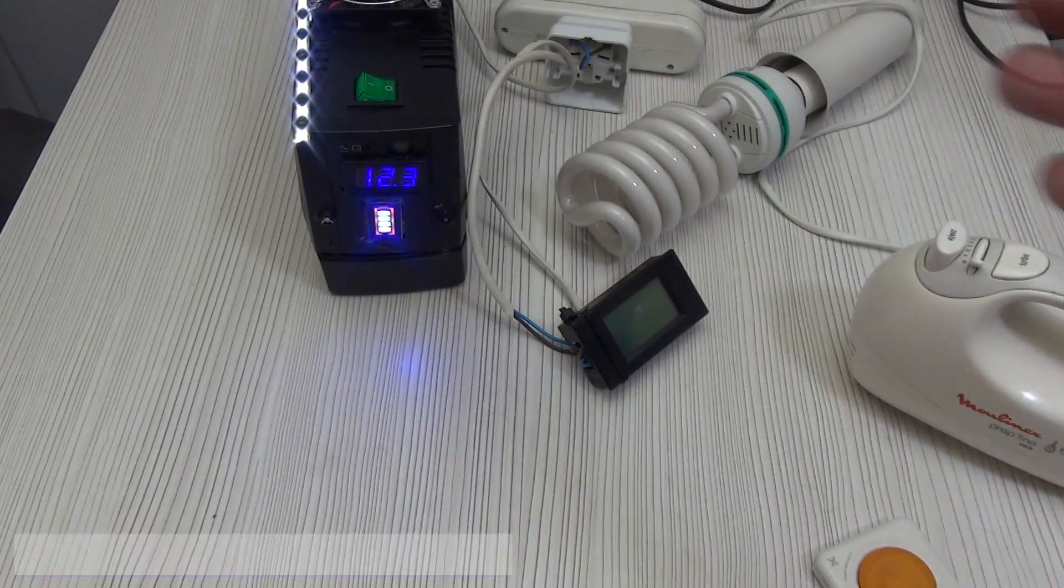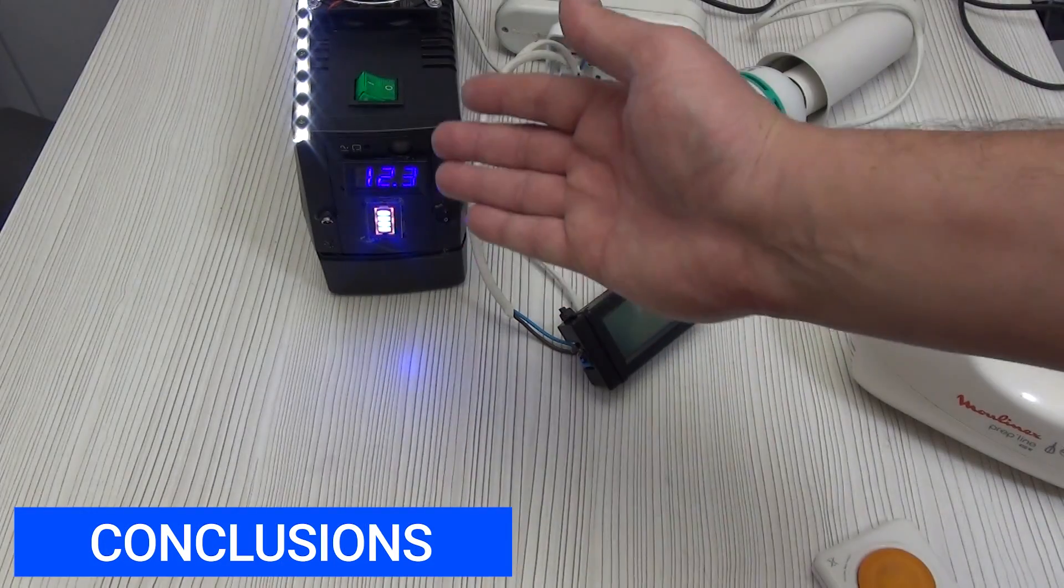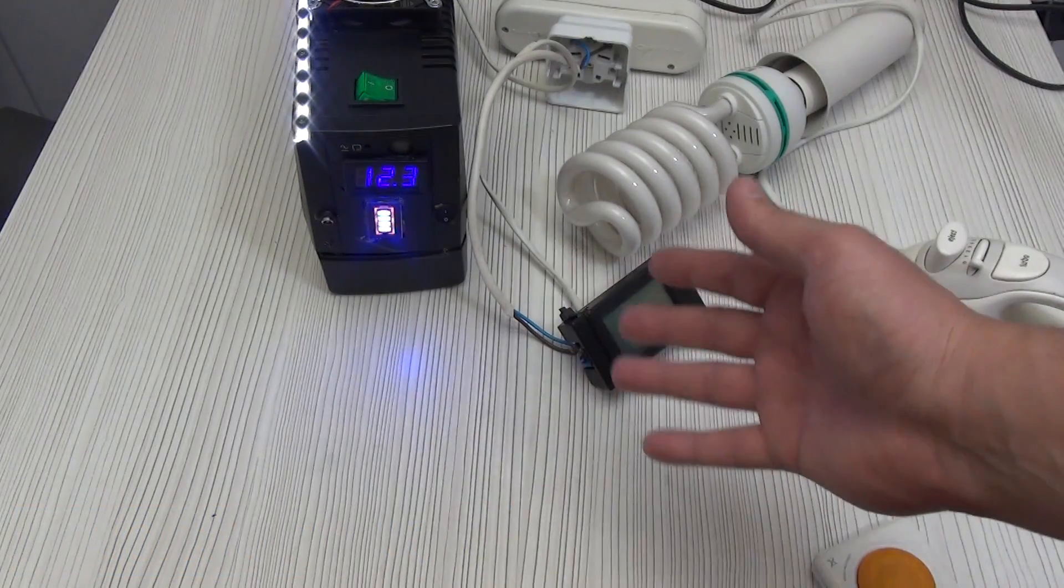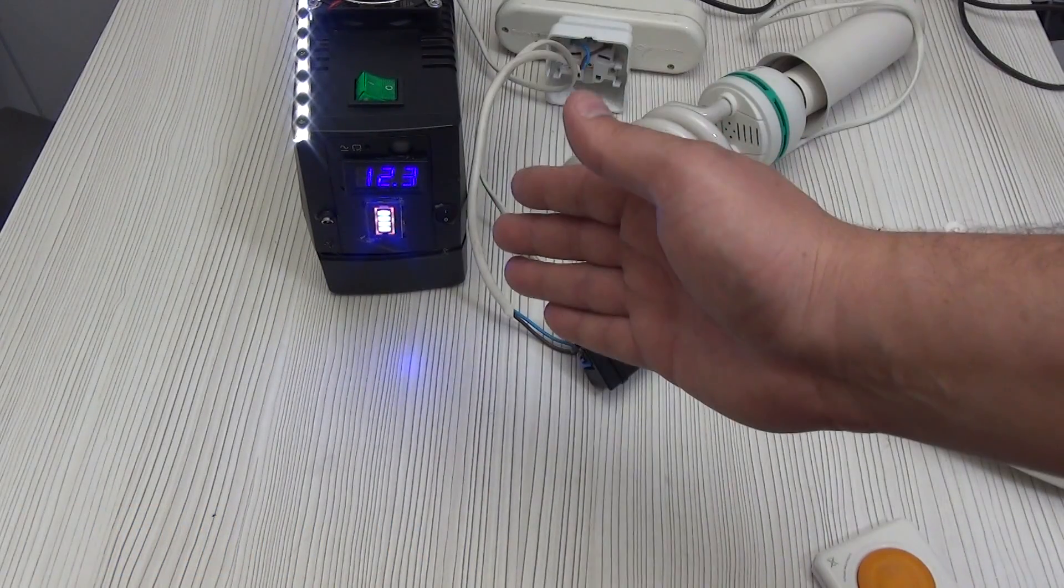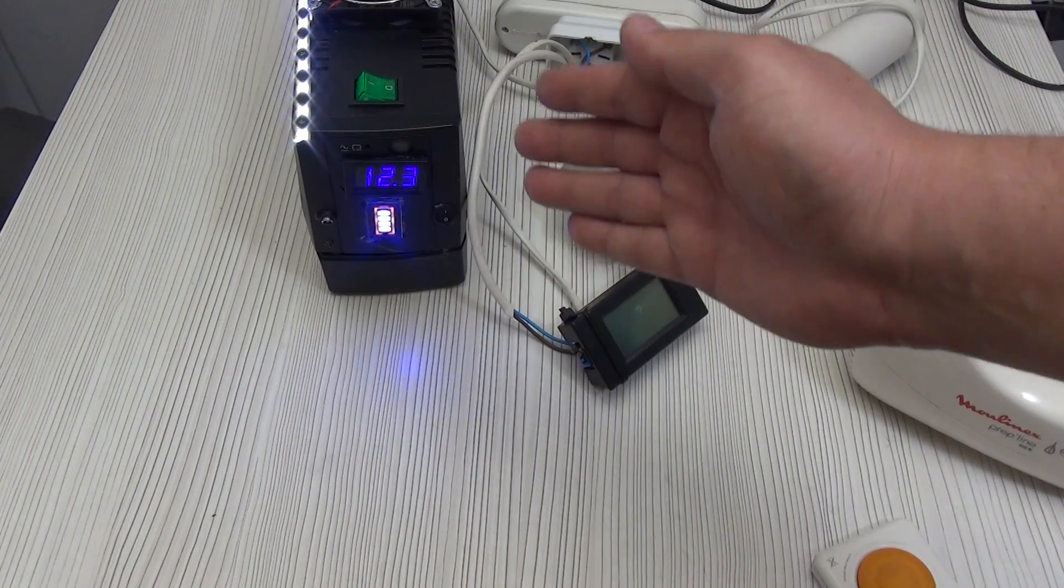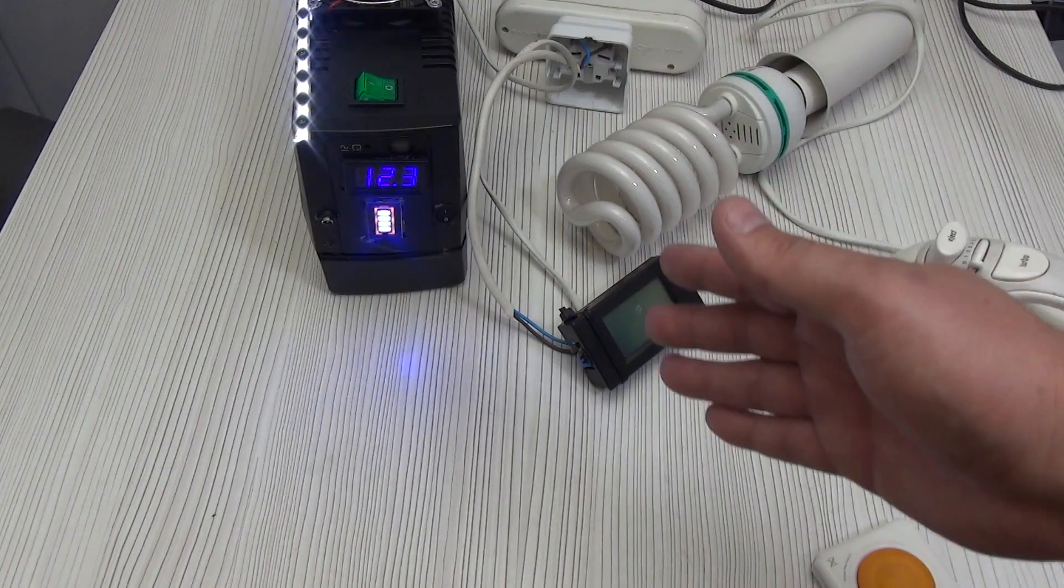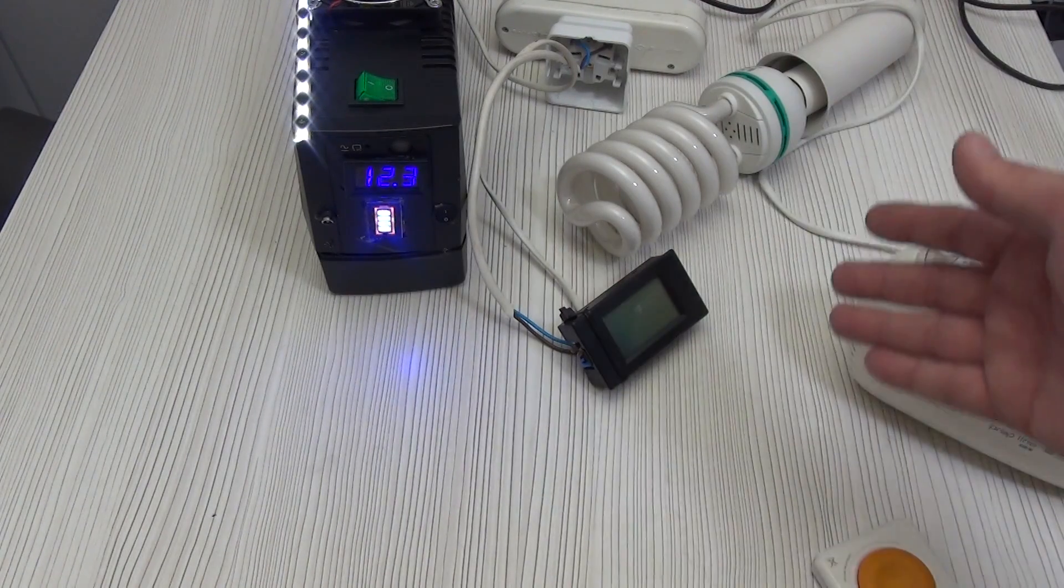What I want to say in conclusion. In terms of operating time, a computer plus a monitor in working mode with a good load is 3 hours 15 minutes, 3 hours 30 minutes, something like that. I have about 3 hours of battery life.